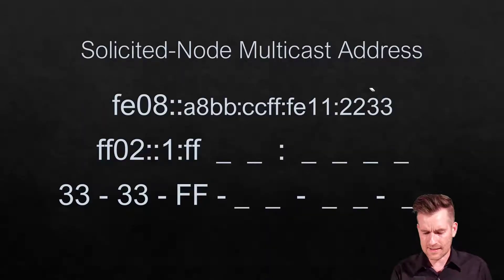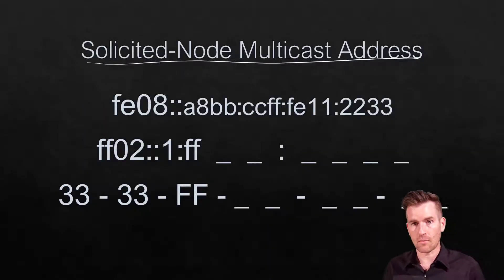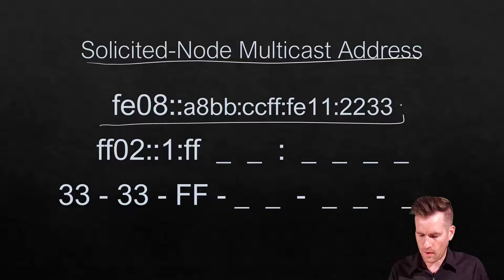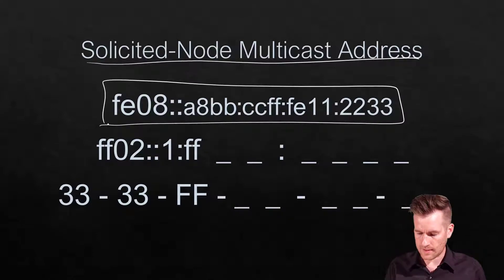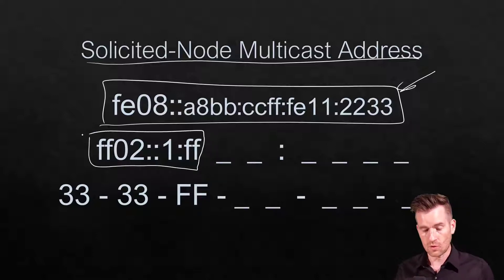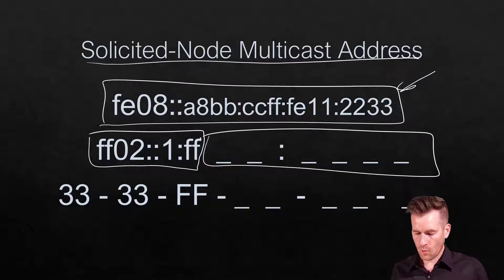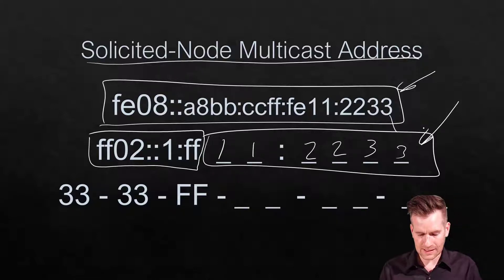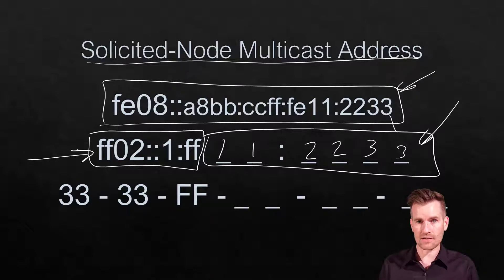Each device needs to figure out its solicited node multicast address, and it's a pretty simple conversion. The solicited node multicast address always starts with FF02::1:FF, and then the remaining bits are filled in with the last bits of the machine's link-local address. So if the address ends in 33:22:11, we fill that in to get the solicited node multicast address that this machine is going to join.